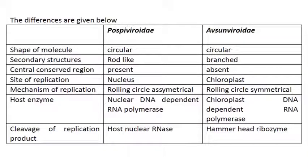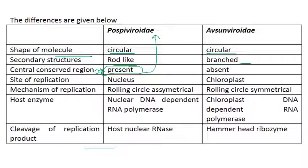The main differences between Pospiviroidae and Avsunviroidae: both have circular molecular shapes. Secondary structures are rod-like in Pospiviroidae. The central conserved region (CCR) is present in Pospiviroidae — this is very important — whereas CCR is absent in Avsunviroidae.